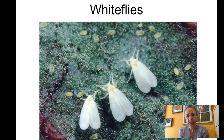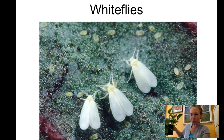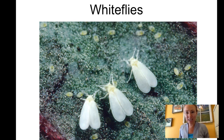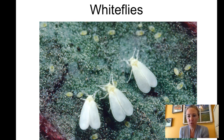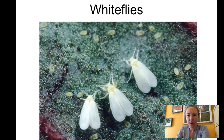Whiteflies are very common in similar controlled environments like tunnels, nurseries, and greenhouses. They tend to be on the undersides of leaves — flip a leaf over and you'll often find them there. One of the easiest ways to scout for whiteflies is to brush the tops of the plant and you'll see the little whiteflies fly up. They're aptly named — small and white, about the size of an aphid. We also have yellow sticky card traps where when they fly they get stuck. Keep in mind if you spray a foliar contact killer on the tops of leaves, these might be hiding on the undersides and might not be affected.